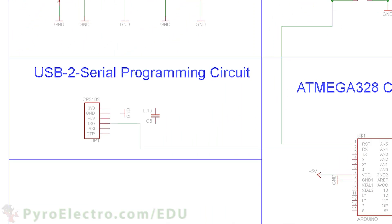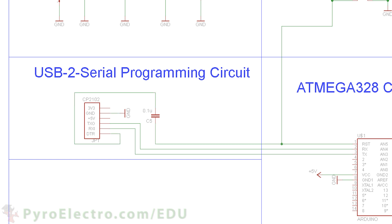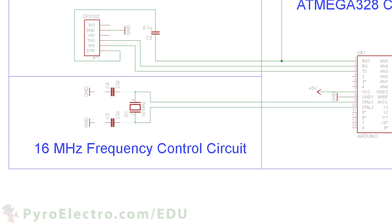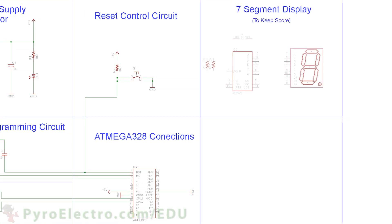A USB to serial converter module is used for uploading the program to the microcontroller. A 16 MHz crystal with two 22 pF capacitors form the frequency control circuit. Next, we'll use a 4026 counter and a seven segment display. The 4026 will drive the seven segment display and the microcontroller will pulse the 4026 from digital pin 13, telling it to increment the score value.